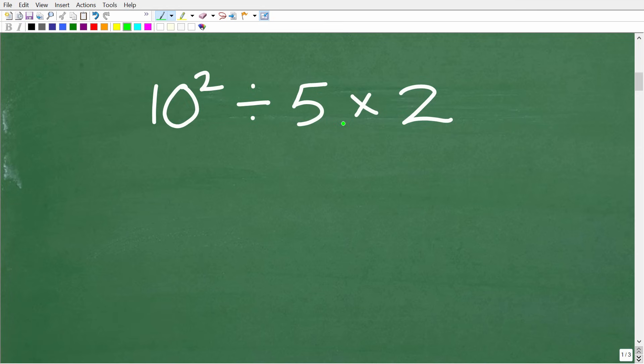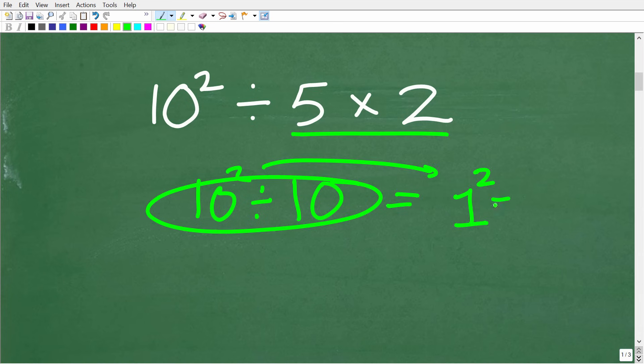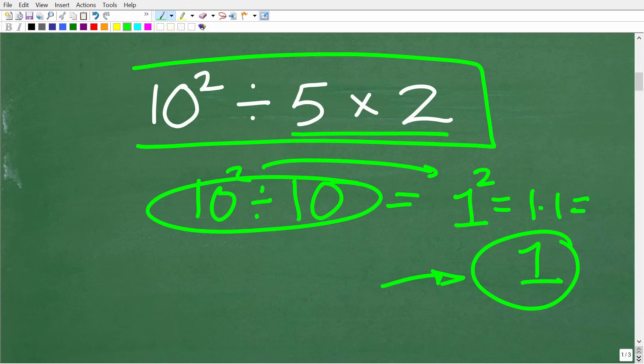So let's take a look at an example of how to do this problem wrong. So maybe we're looking at the problem and saying, you know what, I feel like doing this multiplication first. So 5 times 2 is 10, so that would give me 10 squared divided by 10. So maybe we want to do division next. So 10 divided by 10 is 1. So maybe this is now 1 squared, which is 1 times 1, or 1. Now 1 is the wrong answer, but it is a value that we can generate if we take the wrong steps.